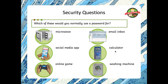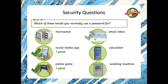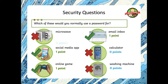If you said microwave — incorrect, you don't need a password for a microwave. Social media app — one point, correct. If you said online game — you get a point. If you said email inbox — you get a point. If you said calculator — incorrect. If you said washing machine — incorrect. If you said microwave — incorrect.